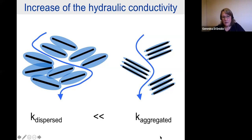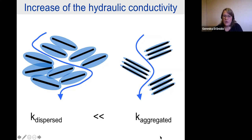When clay is in contact with a polluted solution from a landfill or waste disposal site, the clay becomes aggregated. In particular, when there is ion exchange — for example calcium from the solution replacing sodium in the clay — the structure becomes aggregated and the flow paths increase, suddenly increasing the permeability, which is what we do not want.